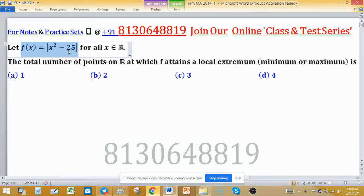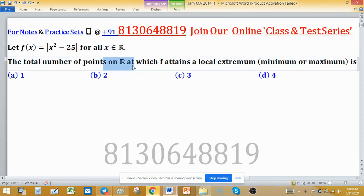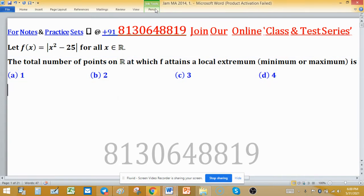Let f equal to mod x square minus 25 for all x belongs to real number. The total number of points on R at which f attains a local extremum (minimum or maximum) - we have to find how many points are on real line for which function attains maximum or minimum.